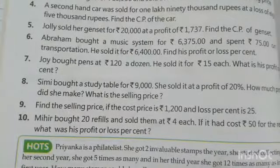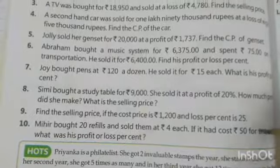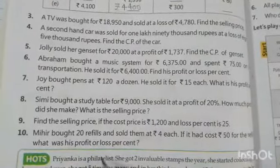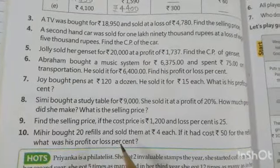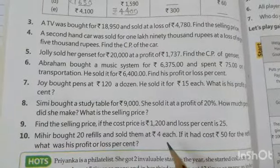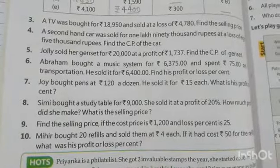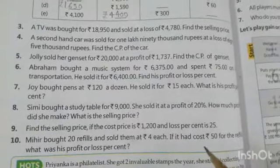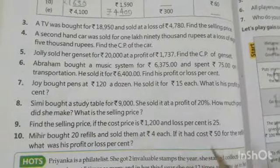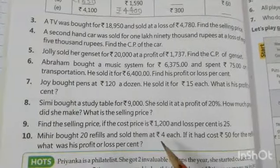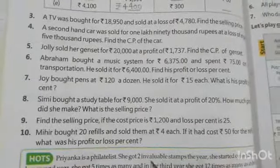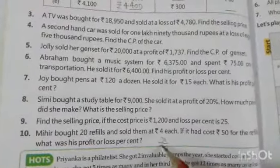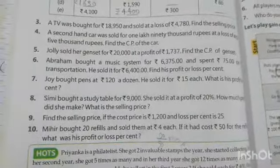Question number 10. Mihir bought 20 refills and sold them at 4 rupees each. It had cost rupees 50 for all the refills. What was his profit or loss percentage? Sales price equals 4 into 20, which is 80 rupees. Cost price is 50 rupees. Since 80, the sales price, is greater than cost price 50, there is profit. Profit equals 80 minus 50, which is 30 rupees. Profit percentage equals 30 by 50 into 100. Try it and find the profit percentage.